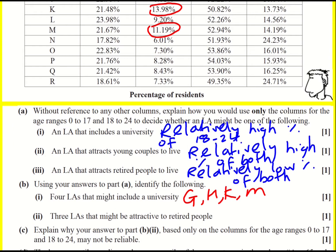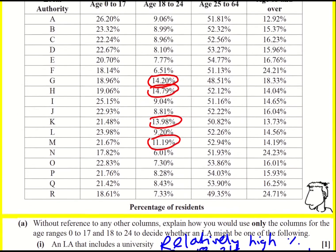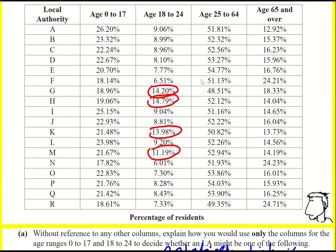Three local authorities that might be attractive to retired people — so that's when we're looking for a relatively low proportion. Looking at the higher ones as a starting point, we've got a very low percentage of 18 to 24 year olds here. The 7.77% is quite small. N jumps out — that's 6% and 0 to 17 is also quite low. And then 7.33% — I should be highlighting both because it's both that we're looking for. So F, N and R.